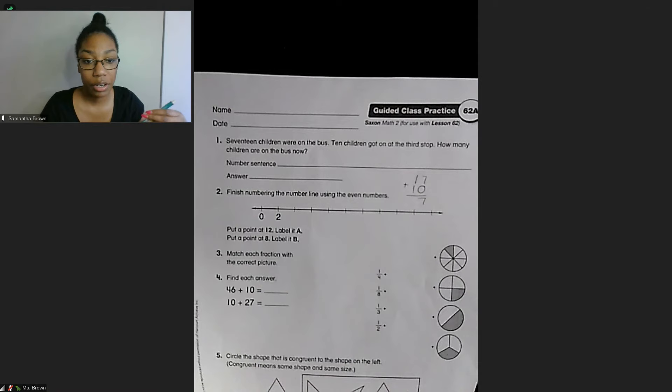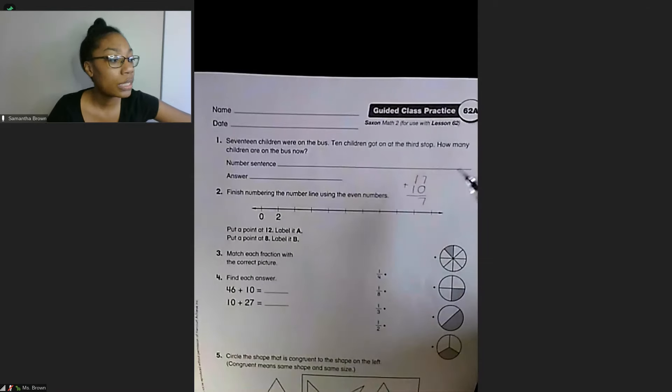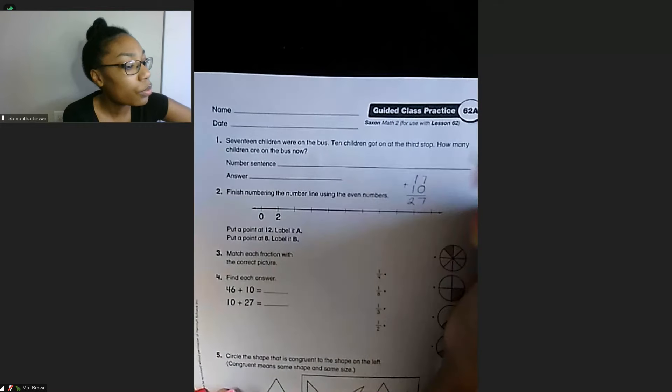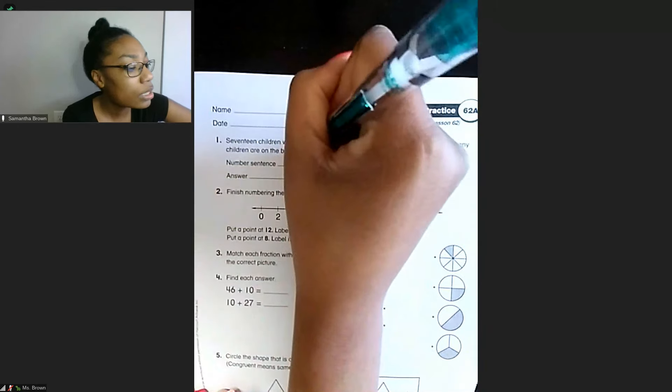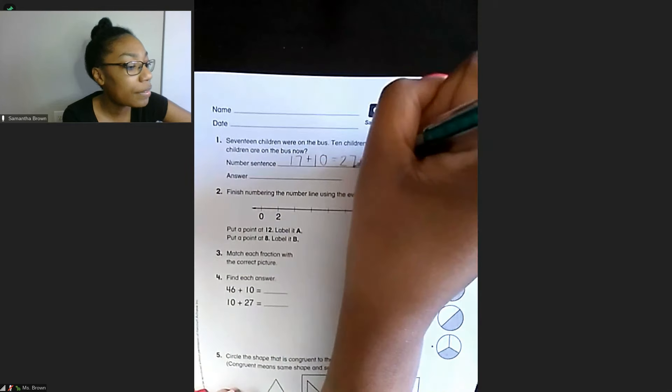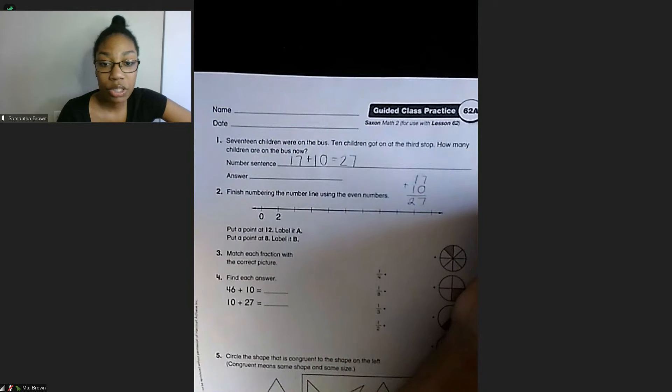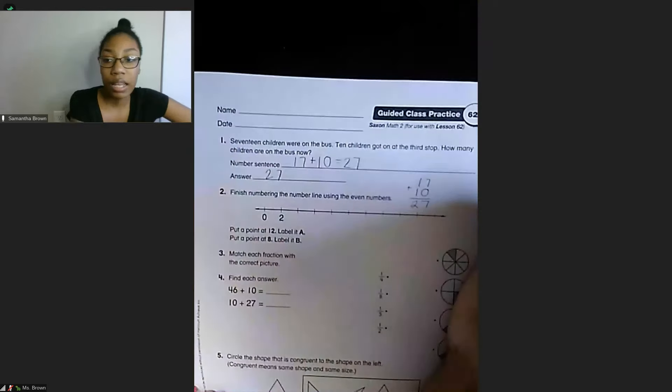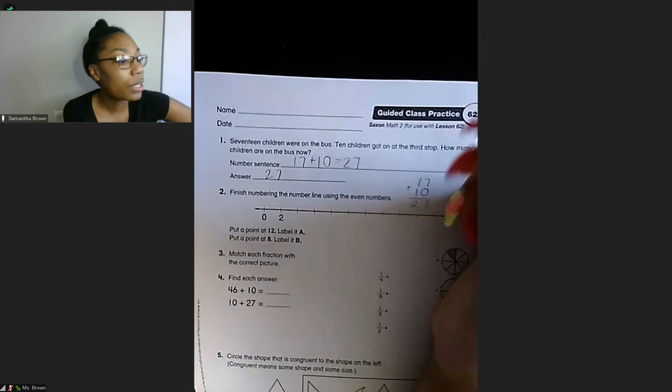So I've already gotten started here, but I'm going to do 17 plus 10 because we had 17 and then we got 10 more. So starting on the right side, we have 7 plus 0 equals 7 and then 1 plus 1 equals 2. So our number sentence would be 17 plus 10 equals 27. And when it asks for the answer, it's also looking for a label. So our answer is 27, but then it would just kind of leave 27 what. So it's important that we put children.